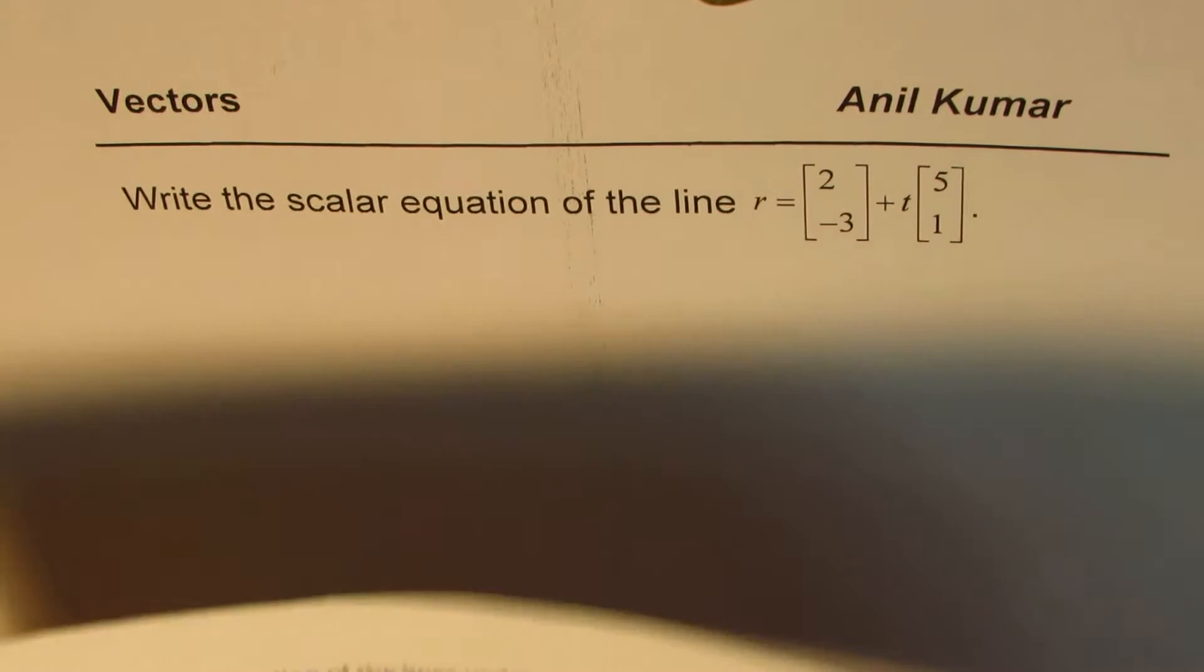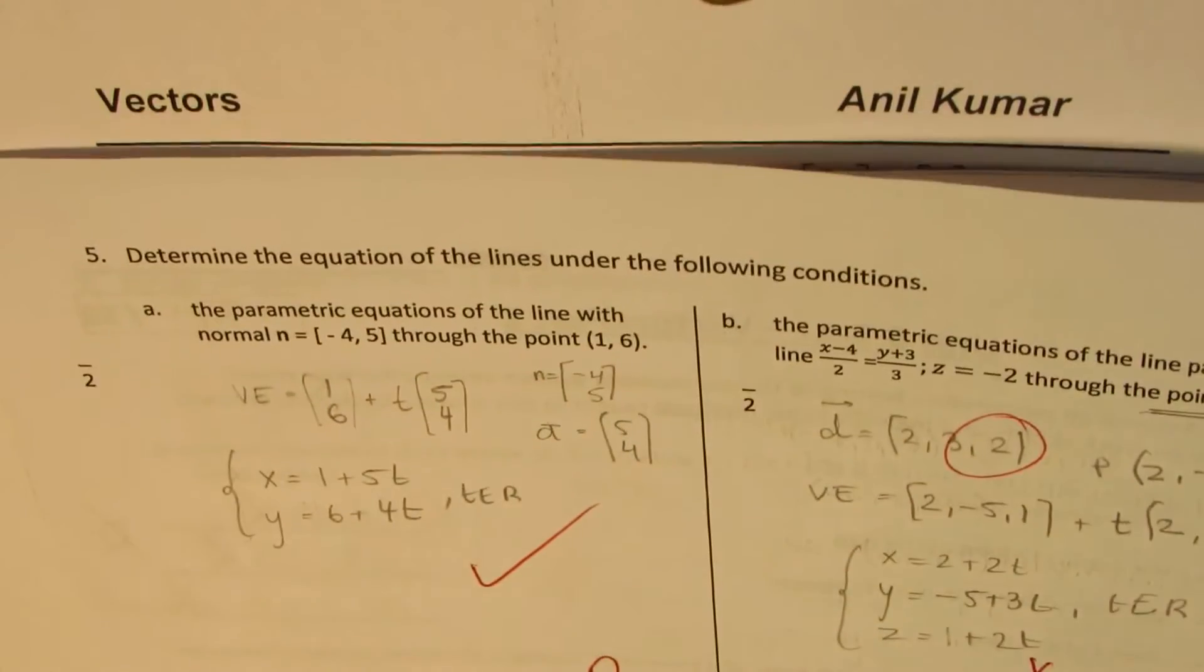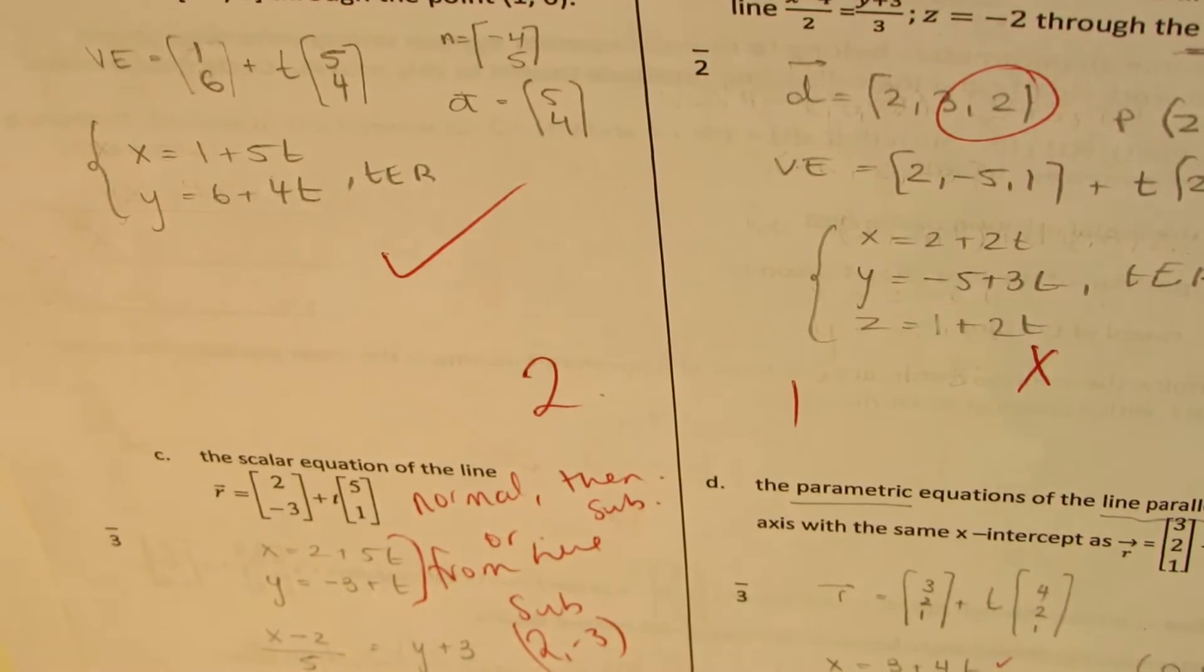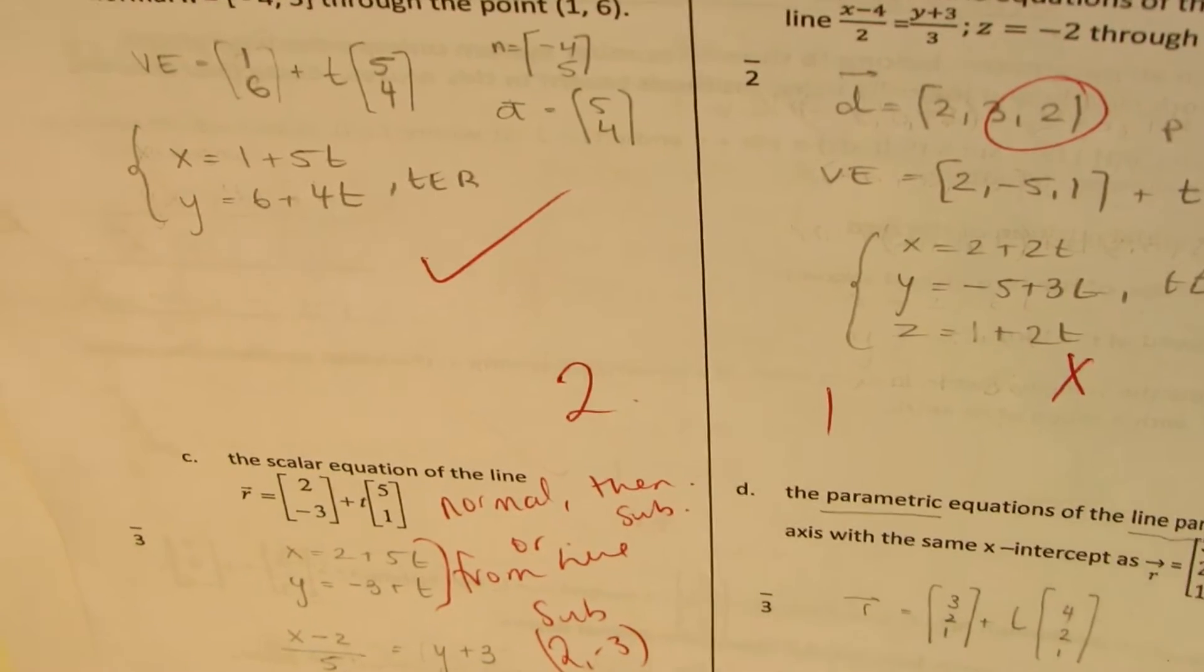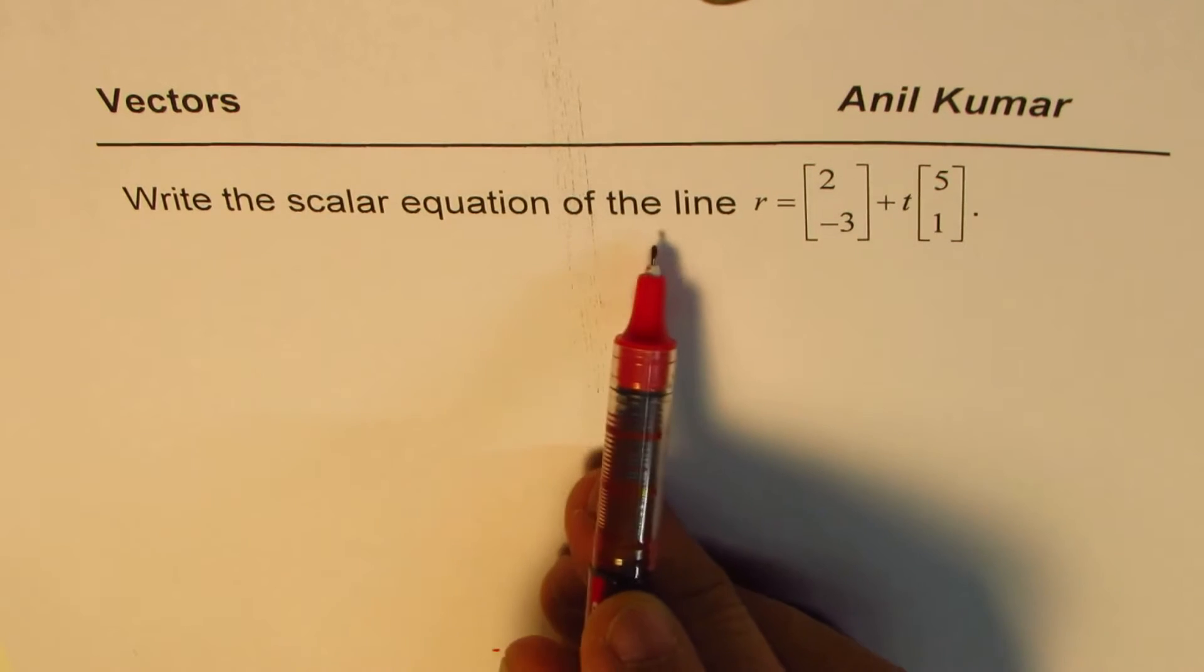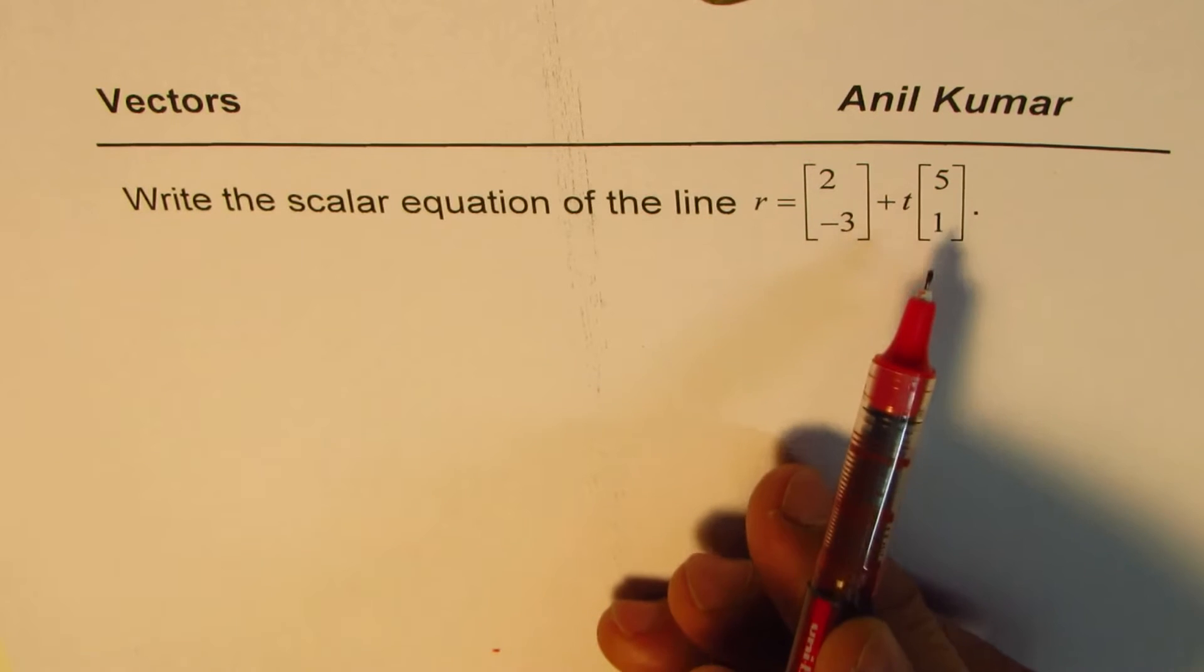I'm Anil Kumar, and in this video we'll discuss a question from a previous test paper. We are trying to find the equation of lines, and we'll do part C, where we need to find the scalar equation. The question here is: write the scalar equation of the line r equals (2, -3) plus t times (5, 1).